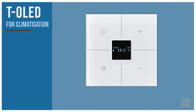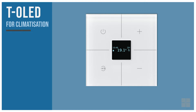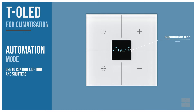Before we start, notice that the touch panel has two operation modes: the thermostat mode and the automation mode. The automation mode comes by default and shows this icon on the display. We use this mode to control lighting and shutters.